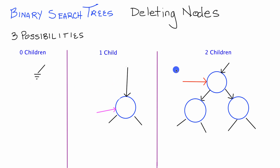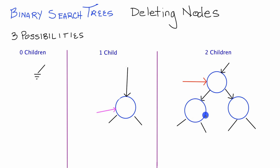Now let's look at the case where we're trying to delete a node that has two children. If we were to just delete this node, we would run into a problem. We would have to reconnect the pointer that was pointing to that node to either its left child or right child. If we choose the left child, we lose all the information in the right subtree, and if we choose the right child, we lose the left subtree. Neither option works because we don't want to lose any information.